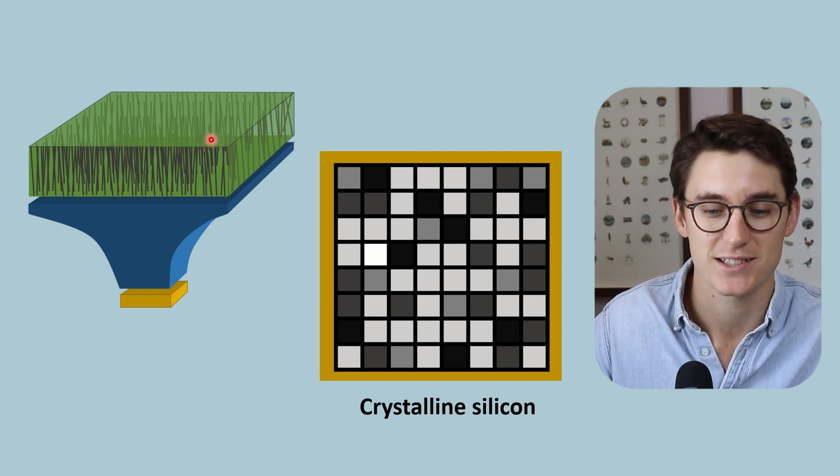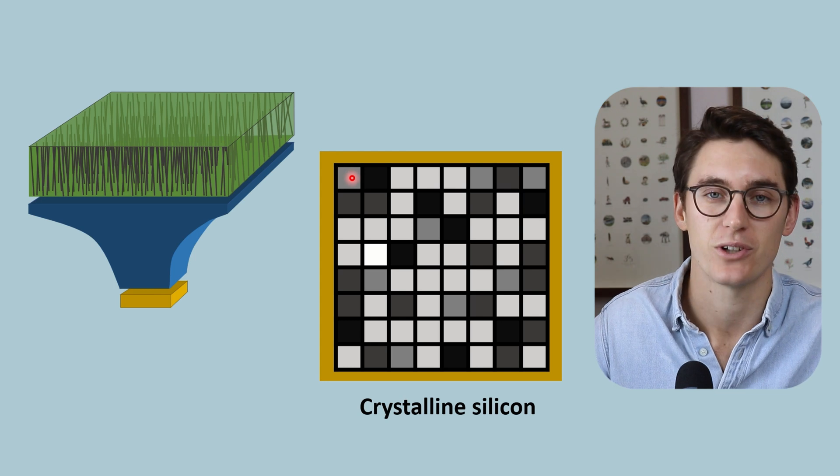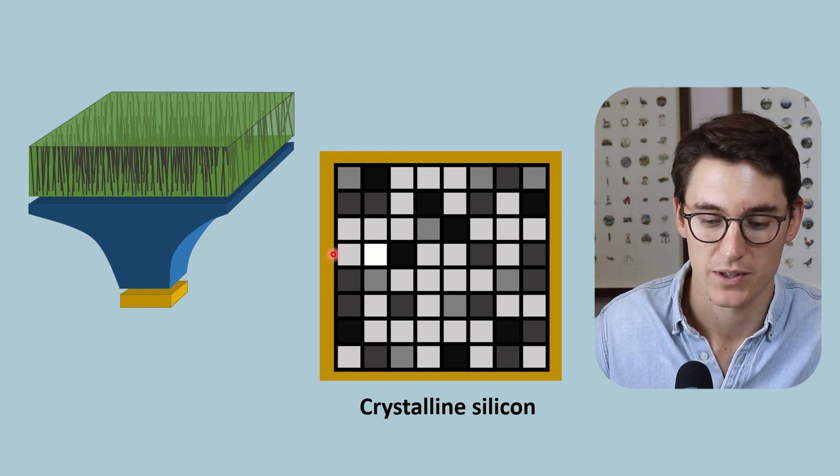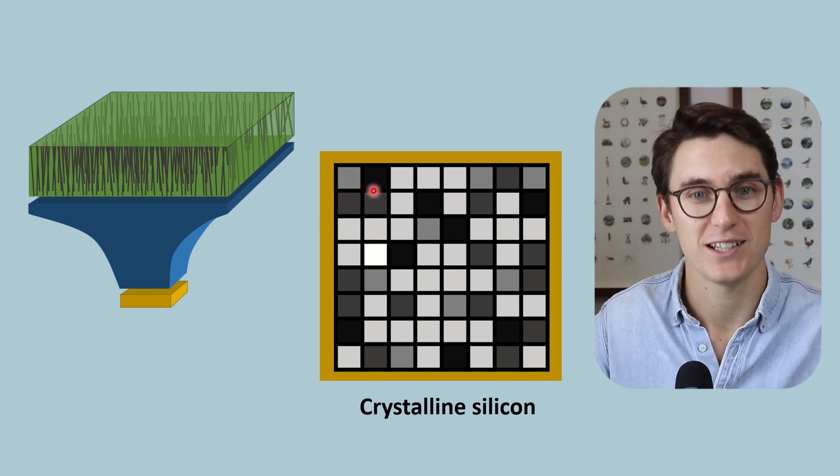Now each dexel corresponds to an X-ray intensity that is hitting our scintillation layer. The higher the X-ray intensity here, the more electrons that are released within that dexel.